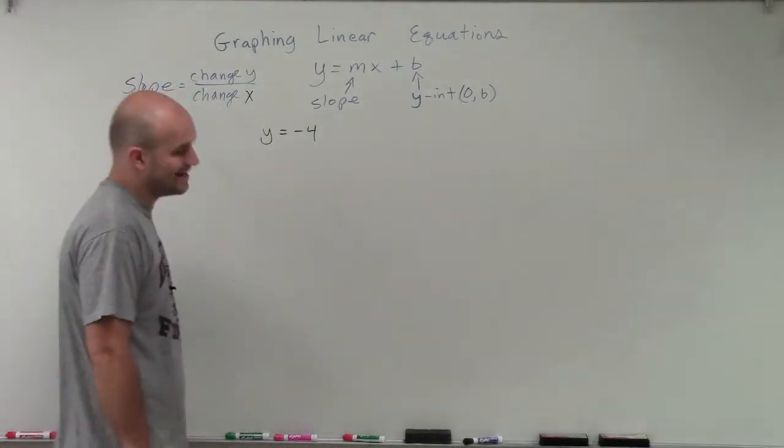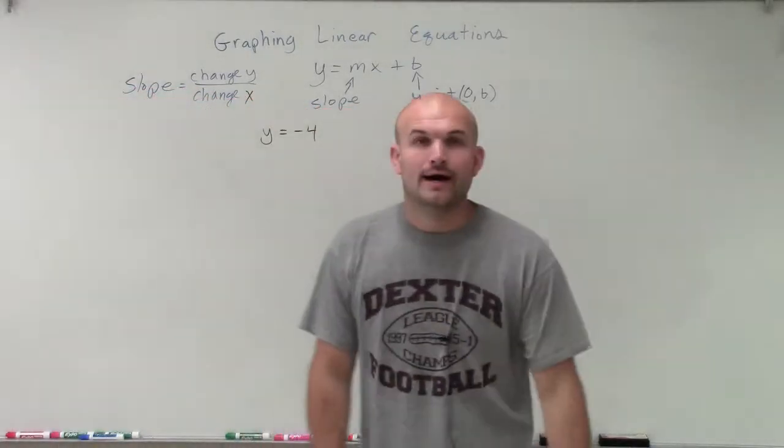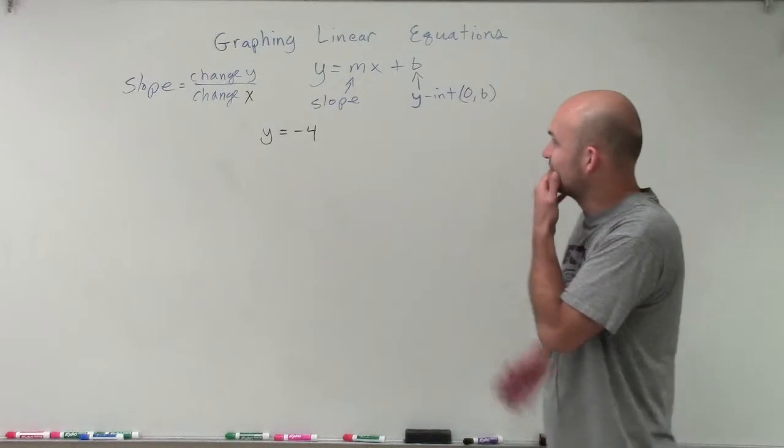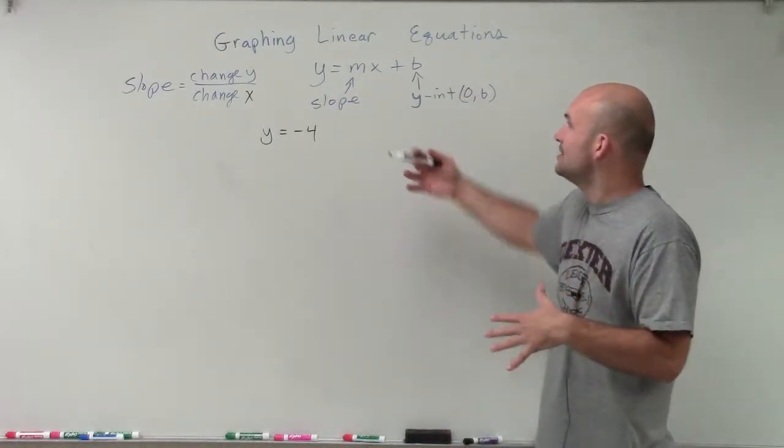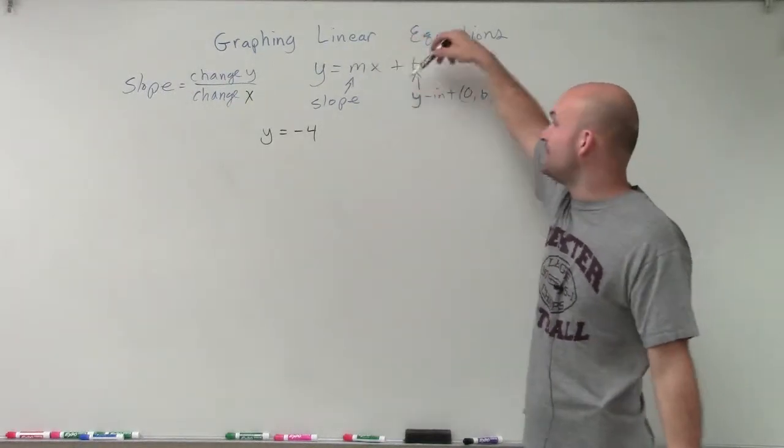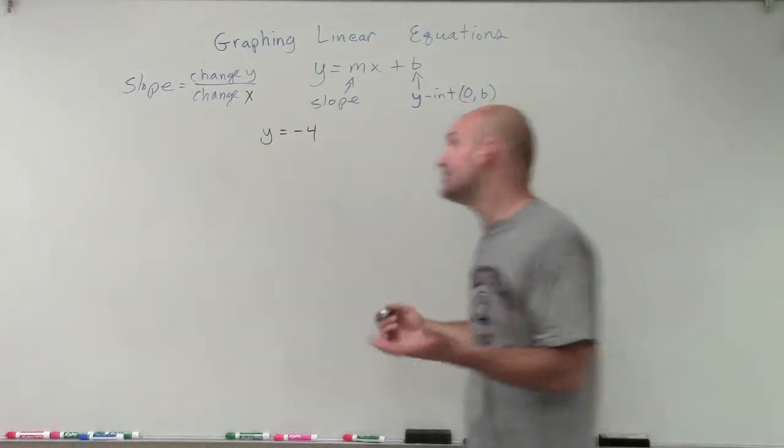Welcome. So in this case, we have y equals negative 4. And what we're going to want to do again is say, is this really in slope-intercept form? It's y equals, but I don't have any number. I don't have an x. All I have is my negative 4, which will represent my y-intercept.